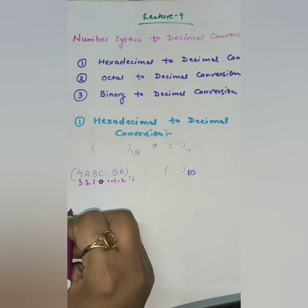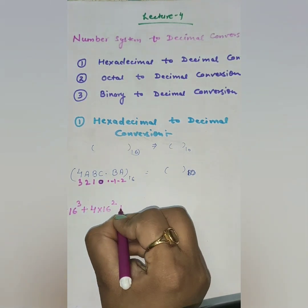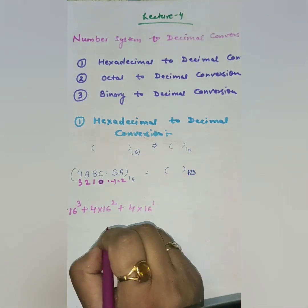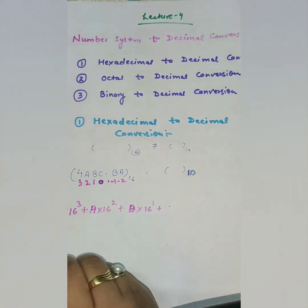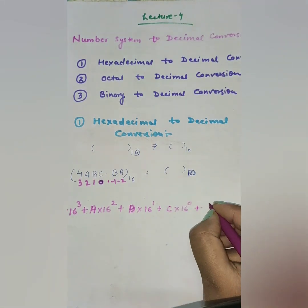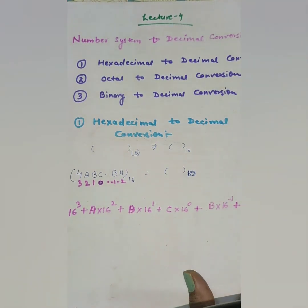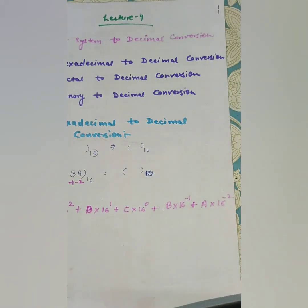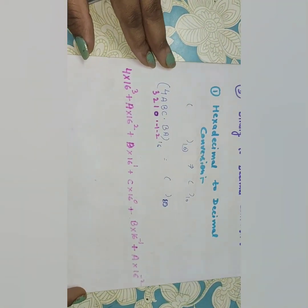So the equation becomes: 4 × 16³ + A × 16² + B × 16¹ + C × 16⁰ + B × 16⁻¹ + A × 16⁻². We write each digit of the hexadecimal number multiplied by 16 raised to its corresponding positional power. You can check this equation.